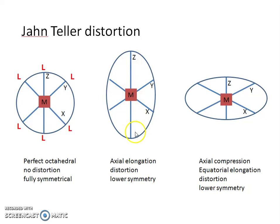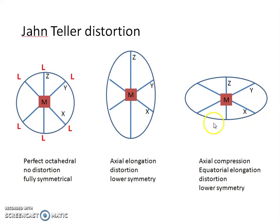Now two types of distortion can happen. You can have elongation in your z direction, called axial elongation, or elongation in your x-y direction, called equatorial elongation. Compression in your z direction — axial compression — and equatorial elongation produce the same type of distortion.